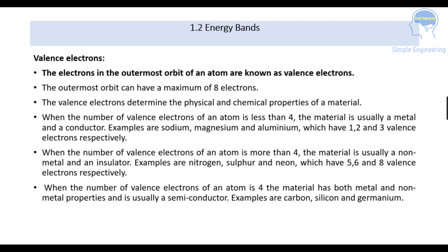When the number of valence electrons of an atom is more than 4, the material is usually a non-metal and an insulator. Examples are nitrogen with 5 valence electrons, sulfur with 6, and neon with 8 valence electrons. When the number of valence electrons is exactly 4, the material has both metal and non-metal properties and is usually a semiconductor. Carbon, silicon, and germanium are examples of semiconductors.